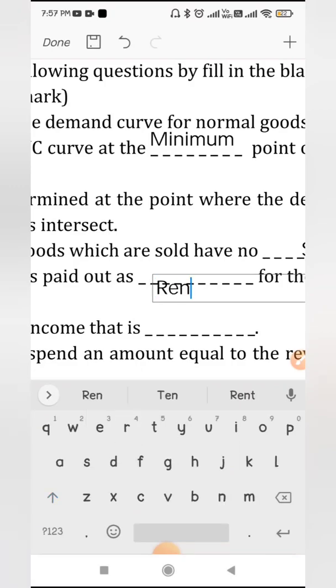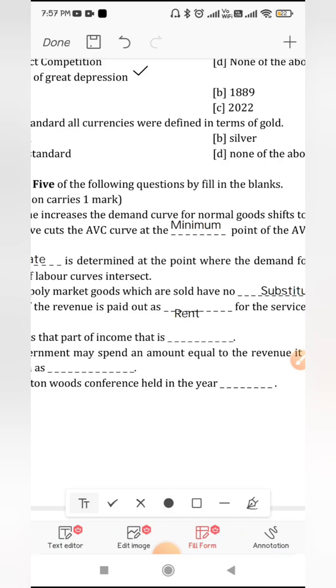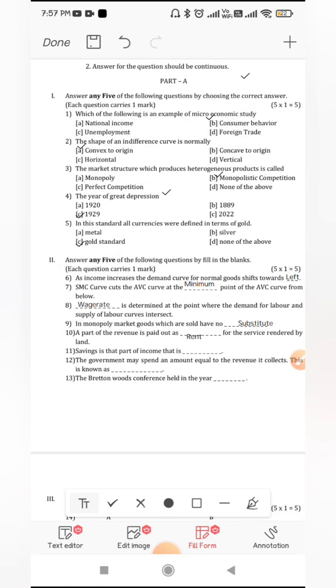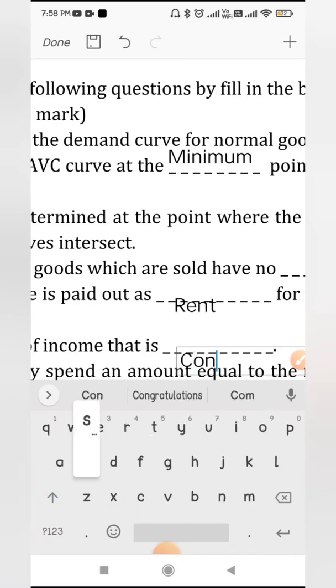For the labour we will pay wage, for the land we will pay as rent, for the capital we will pay as interest, and for the organisation we will pay as profit. Saving is that part of income that is not consumed. That is not consumed will be the answer.